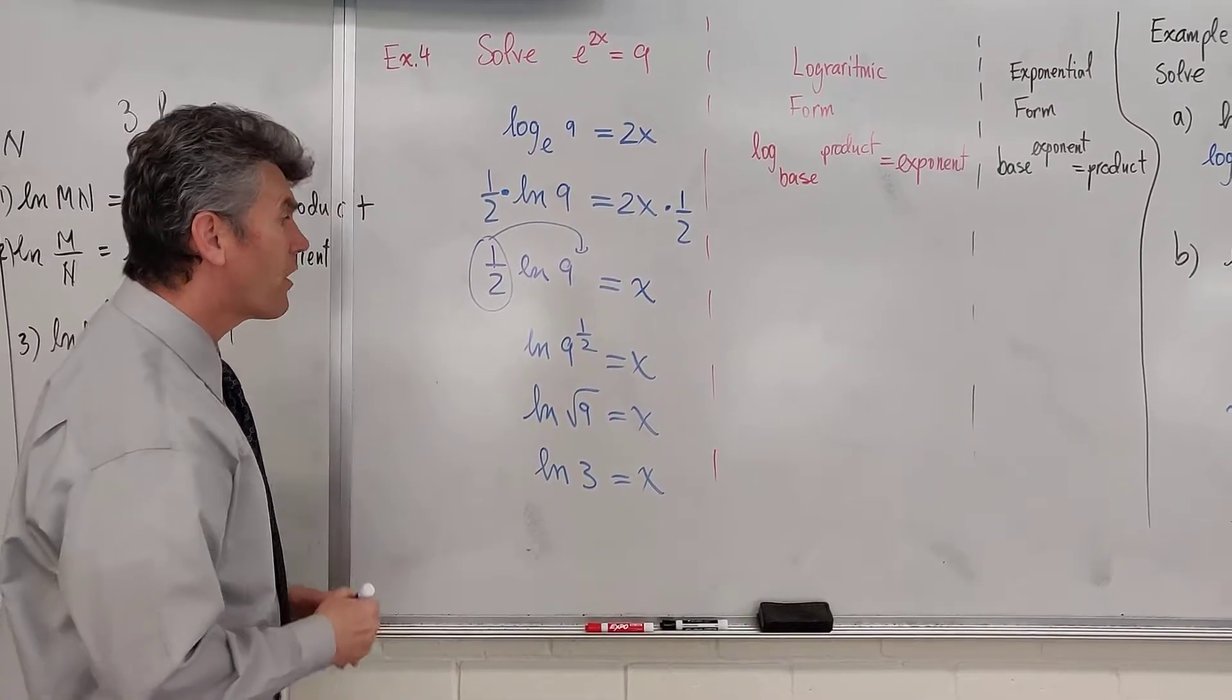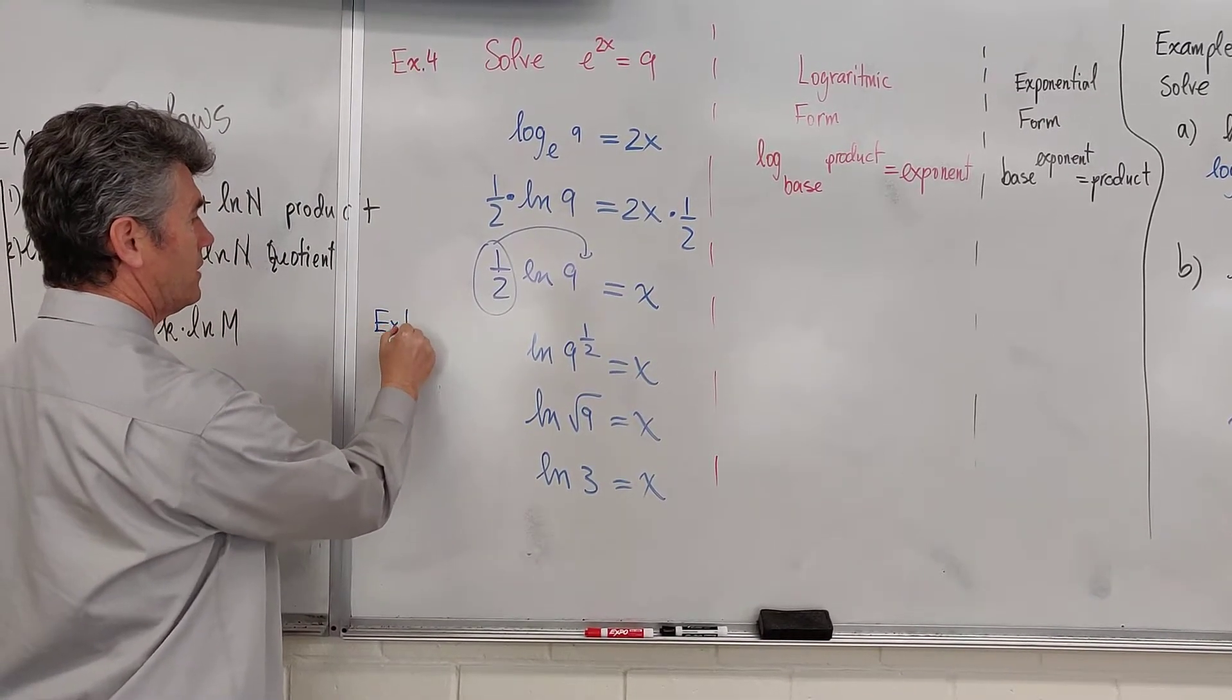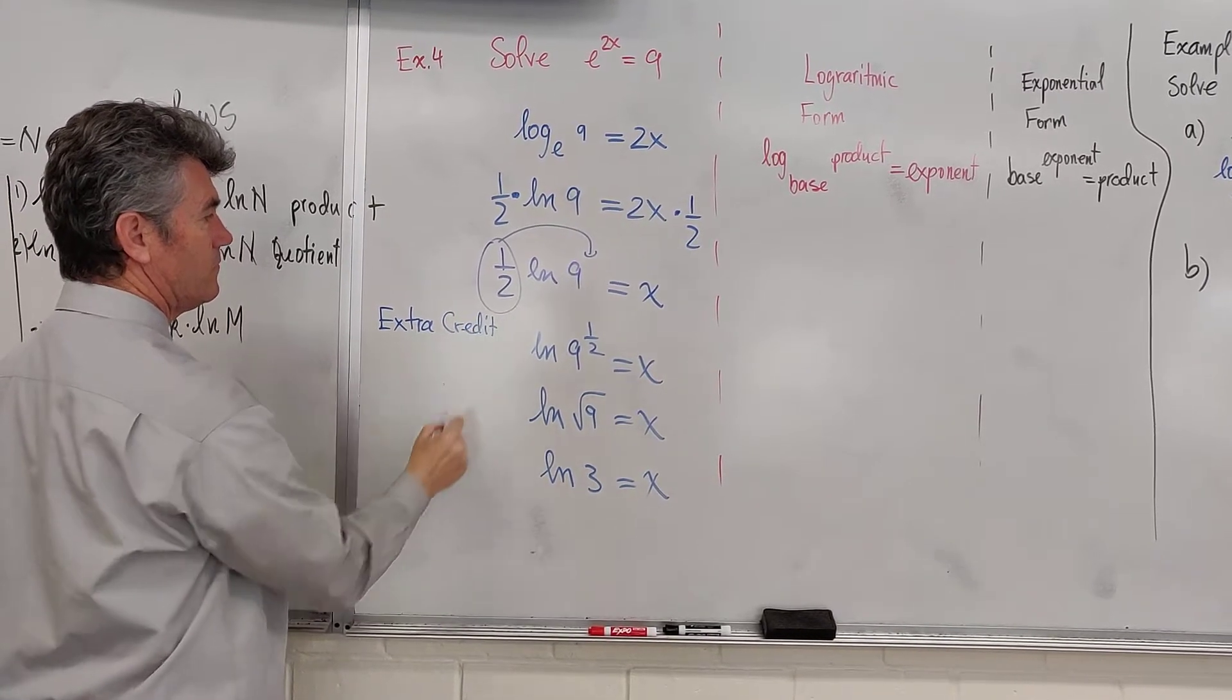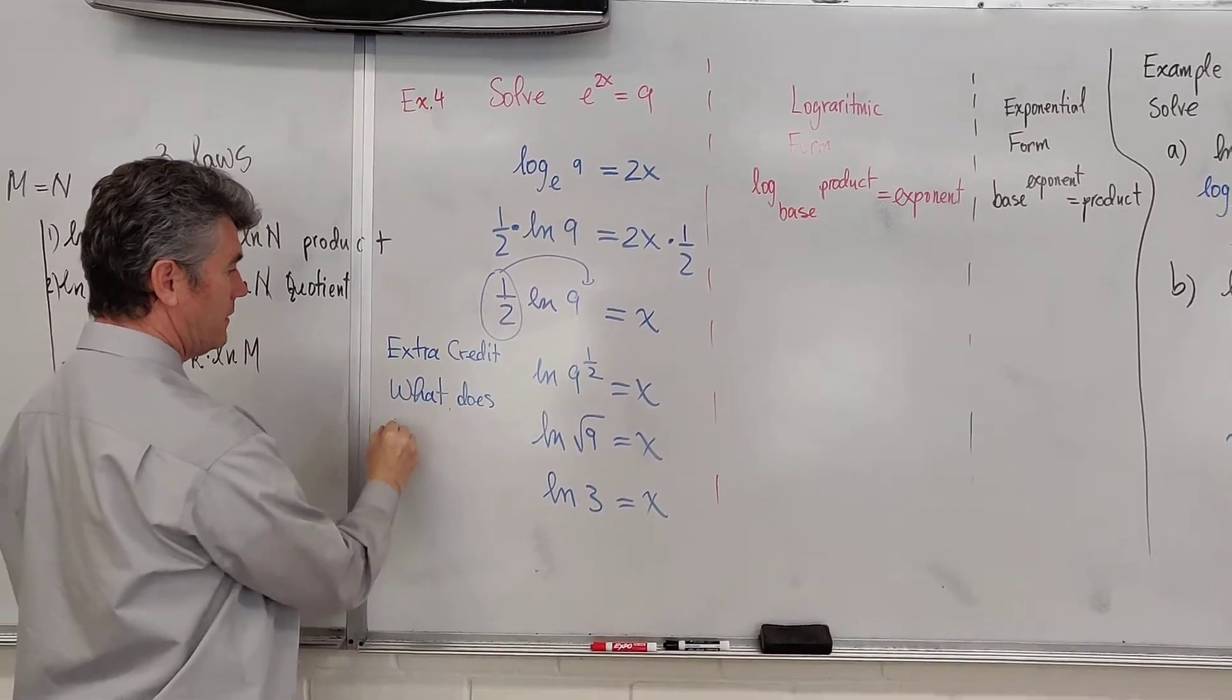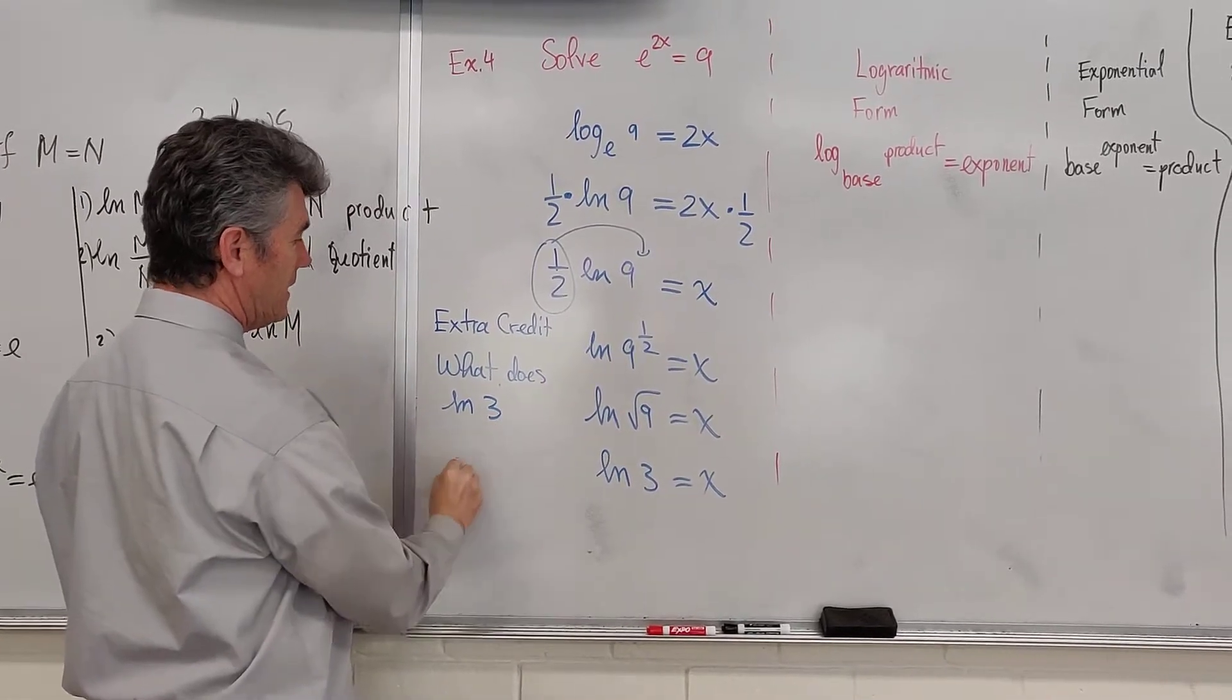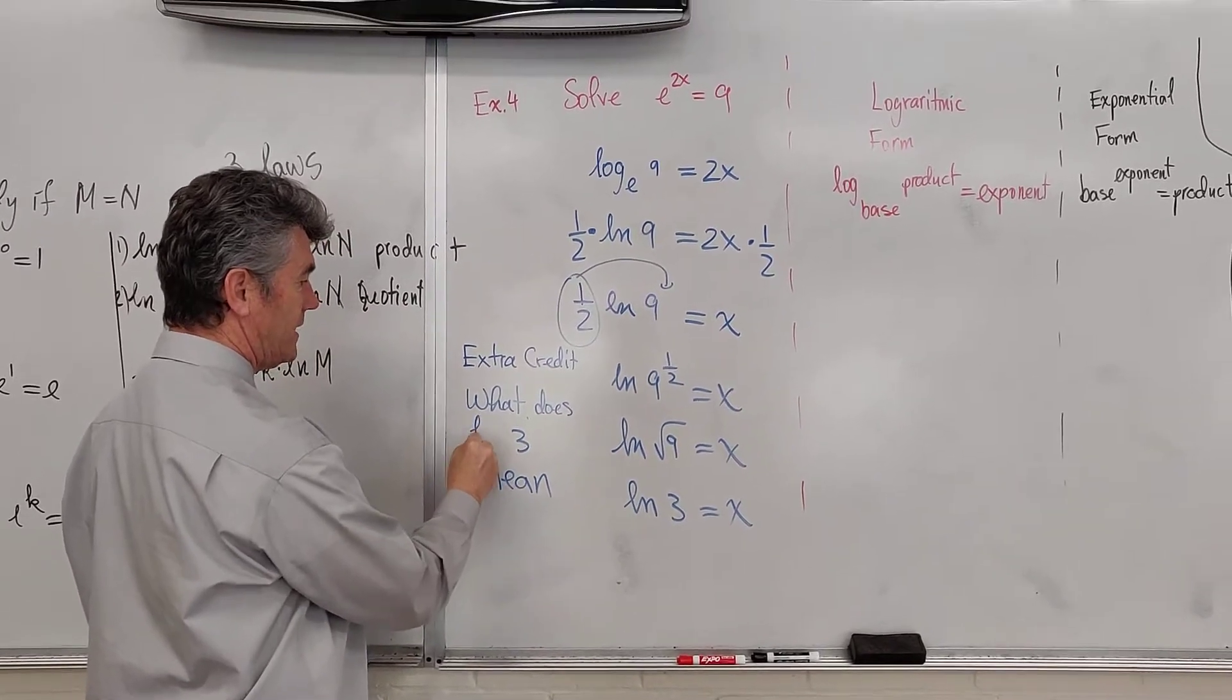There is an ln key. And, as an extra credit question, there is a second one. Extra credit. What does natural log of 3 mean?